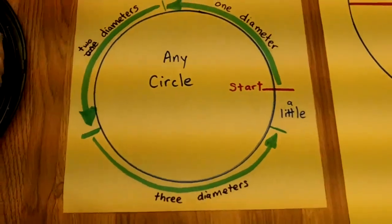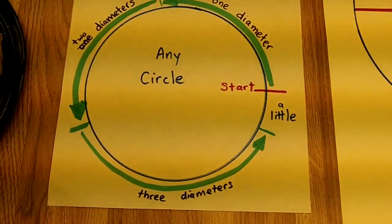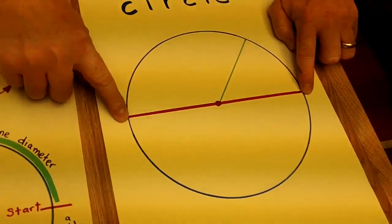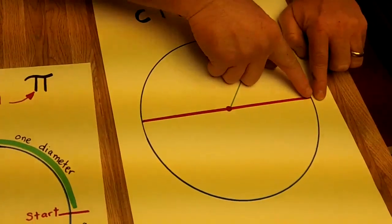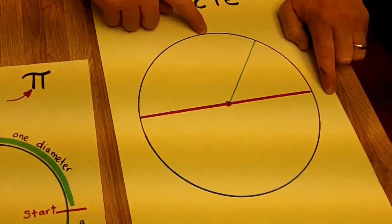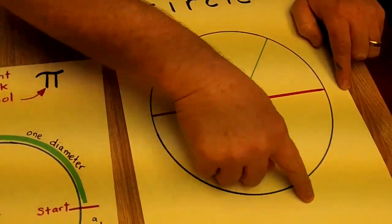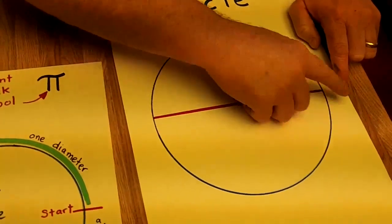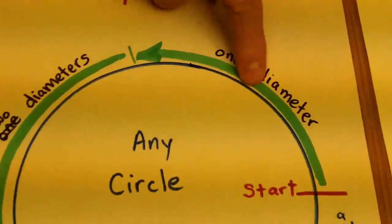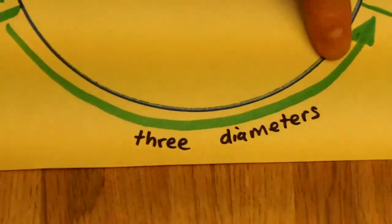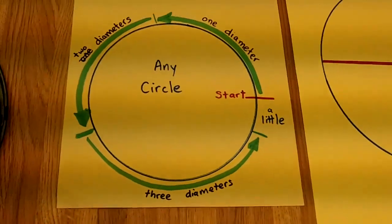Now, here's what pie means. Pie means that if we go over to this big one here, if we take the diameter of any circle, what we can do is we can take three of those diameters, there's one, two, three, and then there's a little bit left over. Every single time, if we go back here now, every single time, there's one, two, three diameters around the circumference and a little left over.